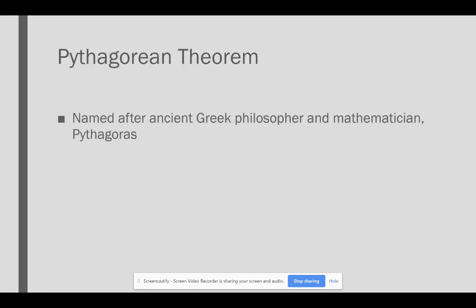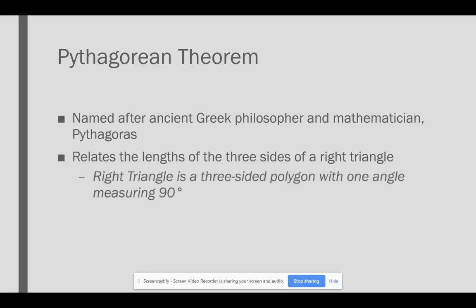The Pythagorean Theorem is named after the ancient Greek philosopher and mathematician Pythagoras, who many believe first developed this relationship that looks at the lengths of the three sides of a right triangle. A right triangle is a three-sided polygon with one angle that measures exactly 90 degrees, and the other two angles are acute, meaning they measure less than 90 degrees.